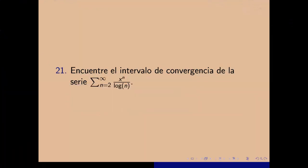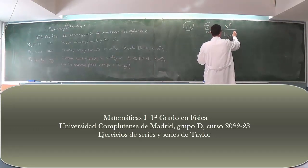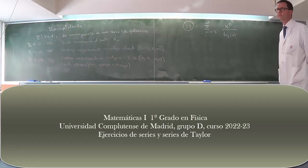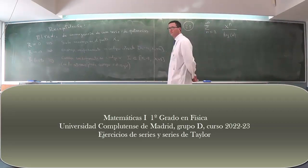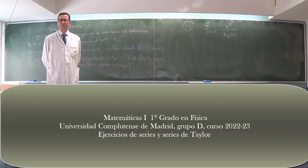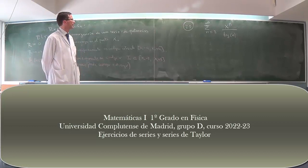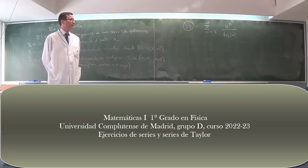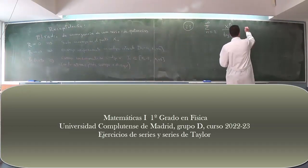Problema 21. Encuentra el intervalo de convergencia de la serie suma desde n=2 hasta infinito de xⁿ dividido por logaritmo de n. ¿Cómo sacamos el intervalo de convergencia? Lo que tenemos que hacer es averiguar la convergencia de la serie y ver para qué valores de x converge y para cuáles no. Para tratar la convergencia me sirve el criterio del cociente.